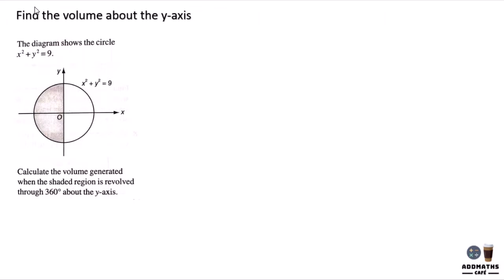Find the volume about the y-axis. Calculate the volume generated when the shaded region is revolved 360 degrees about the y-axis. So this region is revolved about the y-axis.